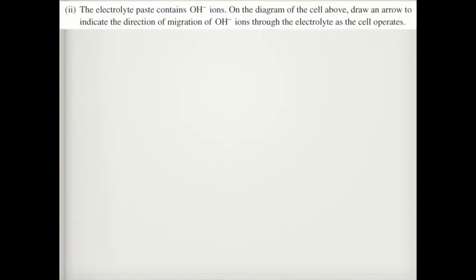In part II, it says the electrolyte paste contains hydroxide ions. On the diagram above, draw an arrow to indicate the direction of migration of hydroxide ions through the electrolyte as the cell operates.